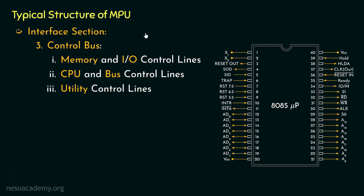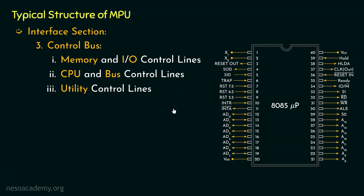Did you notice something? Cumulatively I was calling them the control bus, however when talking about them specifically, I was using the term control lines. The reason is: if you think about the address and data bus, the data bus are bidirectional pins whereas the address bus are unidirectional pins. Coming to the control bus, we don't really have a proper direction — some of them are input pins and some are output pins. So instead of calling them a bus, which usually has a proper direction, we should call them lines. That makes more sense, however traditionally they are cumulatively called the control bus.